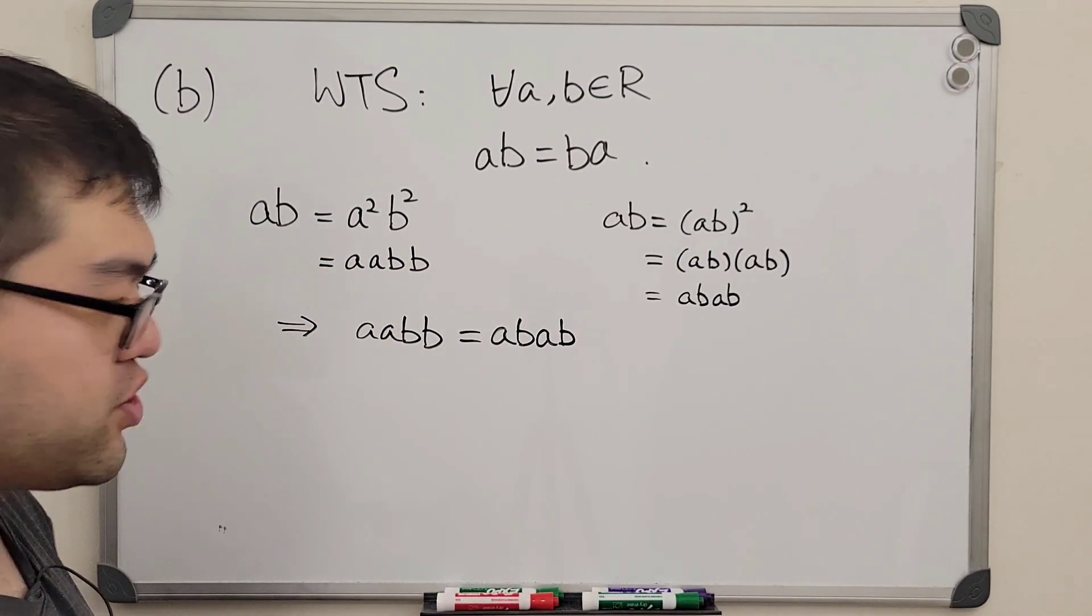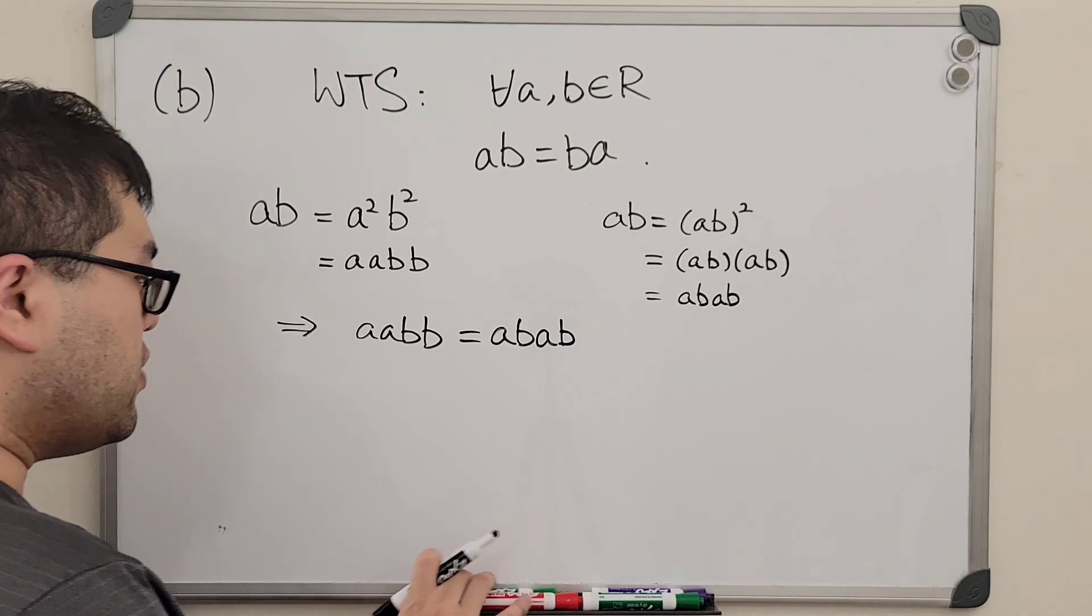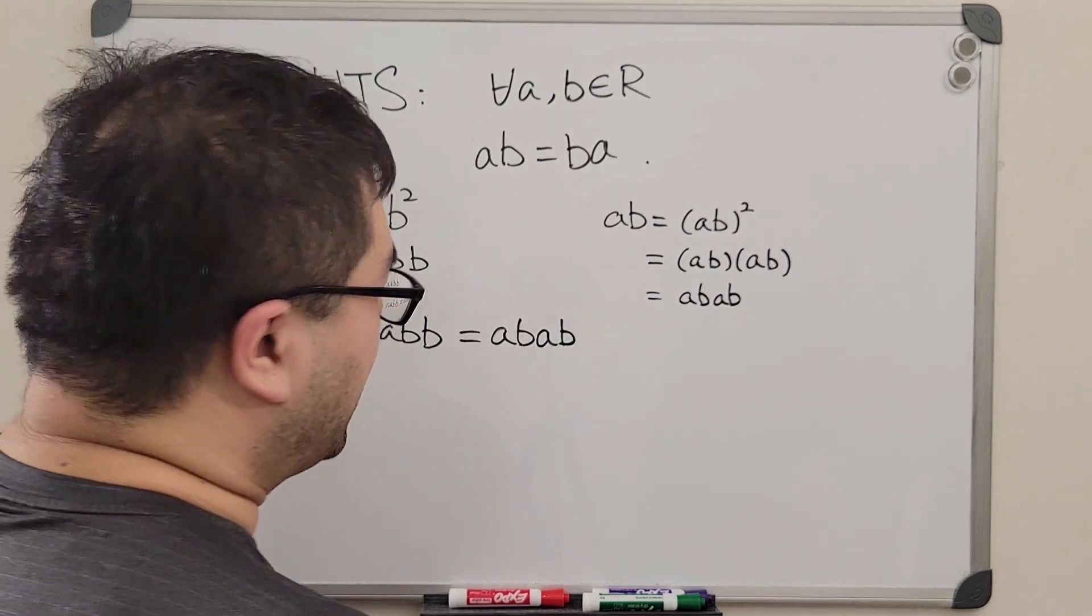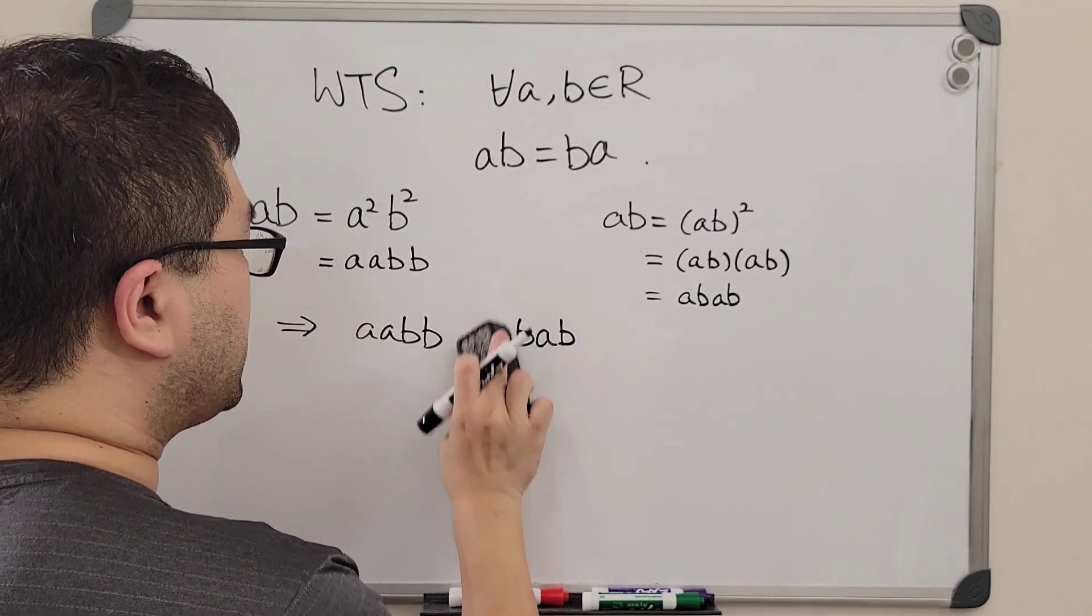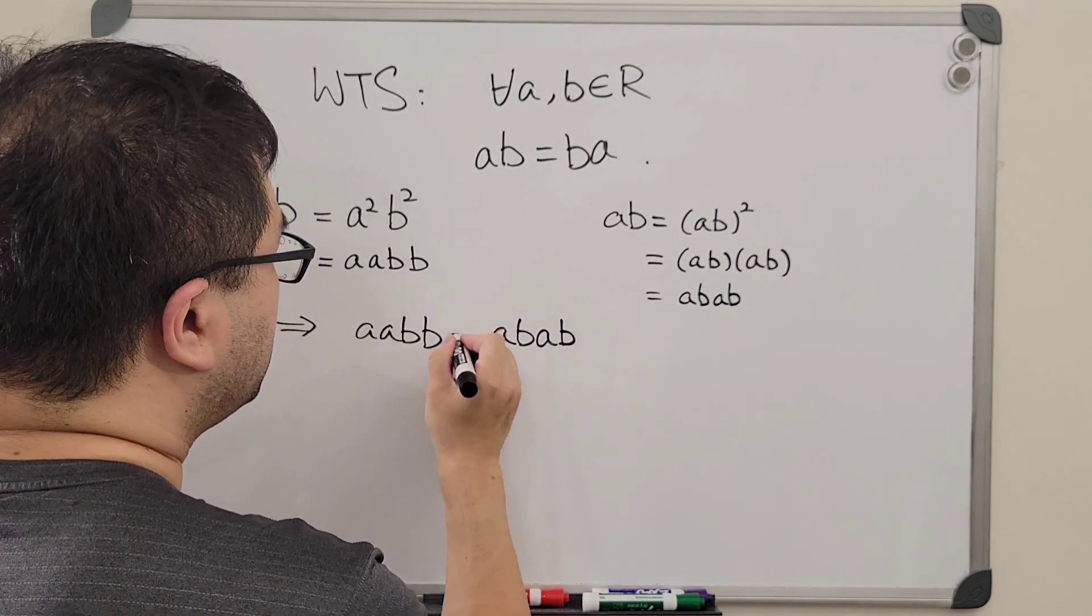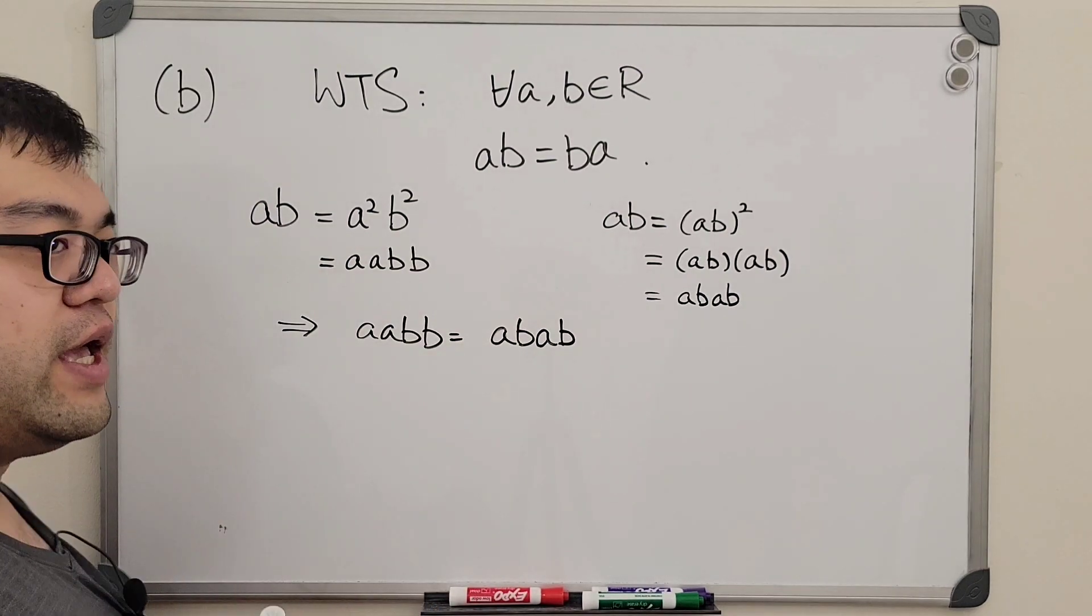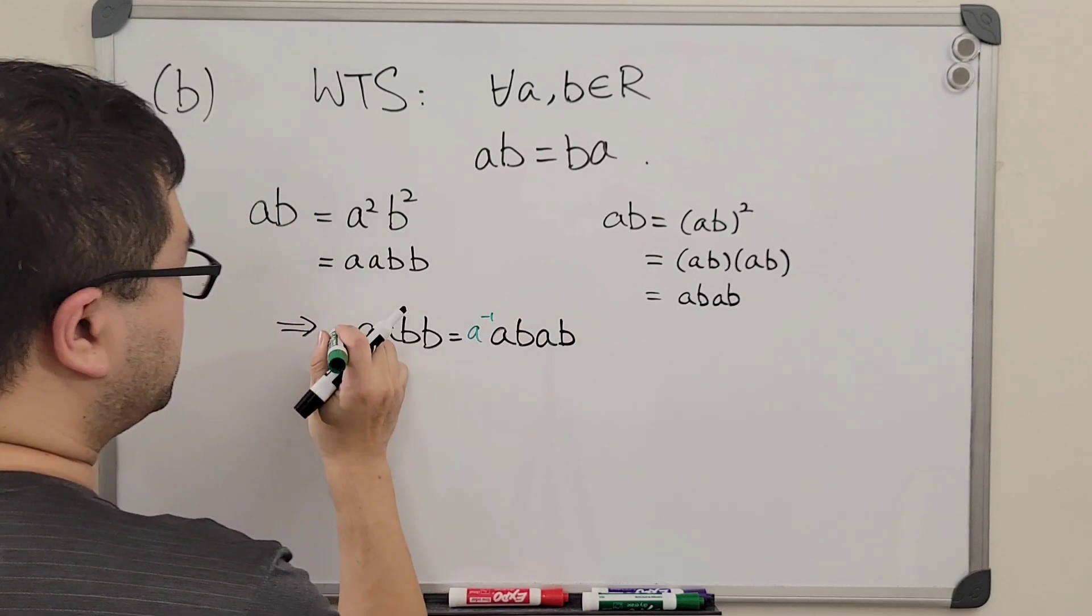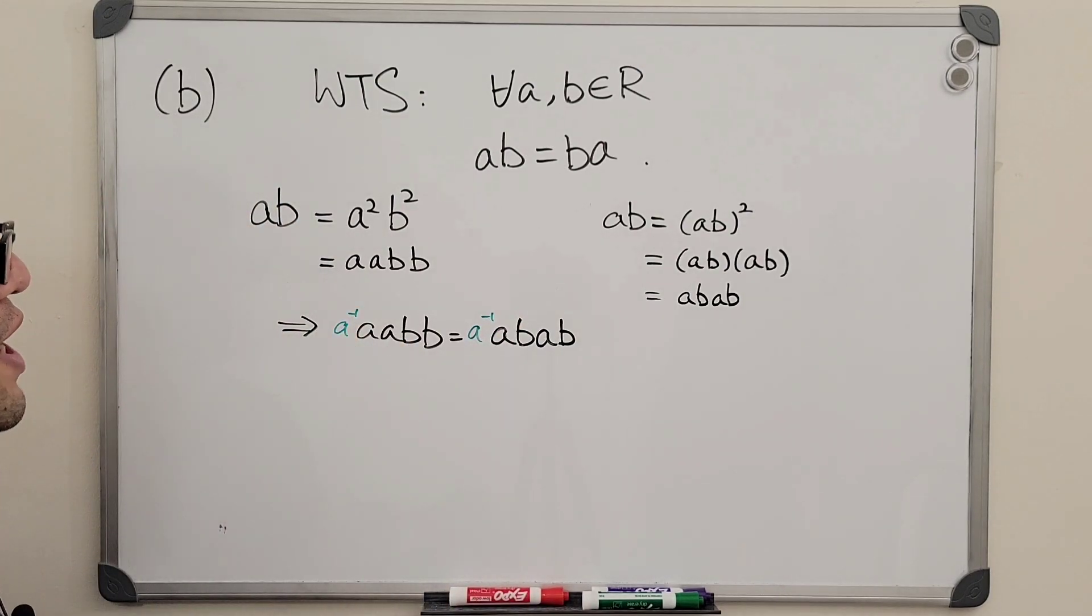Of course we can try to undo something. We see that on both sides we start off with an a on the far left, meaning we can now try to undo the a element on the left by multiplying with the a inverse. And again, that is supposing that